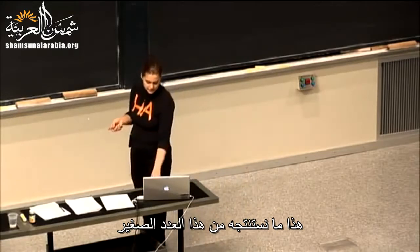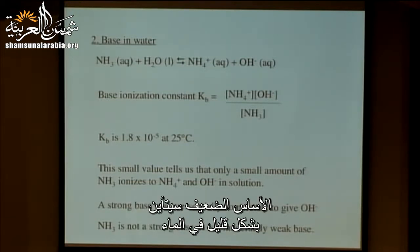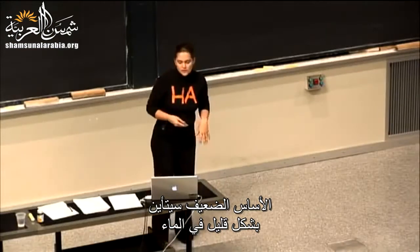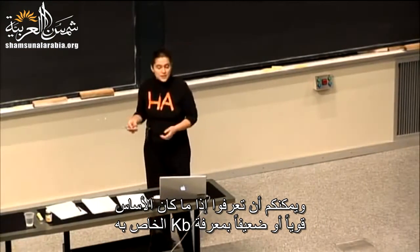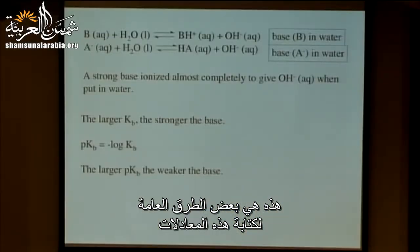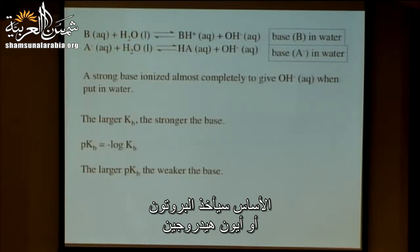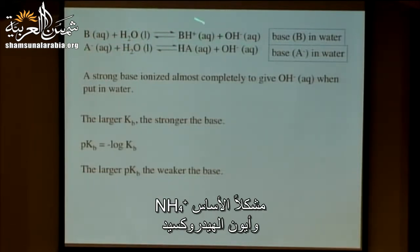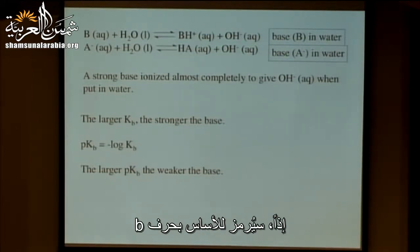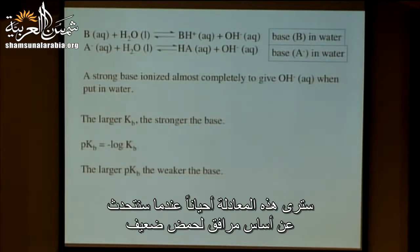A strong base is something that reacts pretty much completely to give hydroxide ion. A weak base only ionizes a little bit in water. You can tell whether something is strong or weak by its Kb. Here are some general ways to write these equations. A base in water: the water acts as the acid, the base accepts the proton forming BH+ and hydroxide ion. You could also write a base as A⁻ in water going to HA plus hydroxide. You'll see this when talking about a conjugate base of a weak acid.